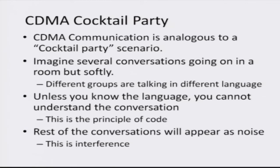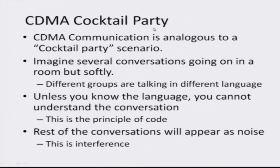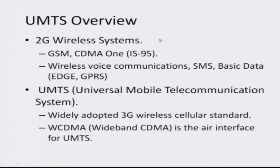These codes are akin to different languages, and each user or device speaks sufficiently softly so that it does not swamp the conversation of the other devices. Since the other devices are on different codes, they are like different languages which appear as interference, and since they are soft, this interference does not swamp the communication of the particular device. It's a very interesting technology with many interesting properties, but for this module we will go over some basic overview features.